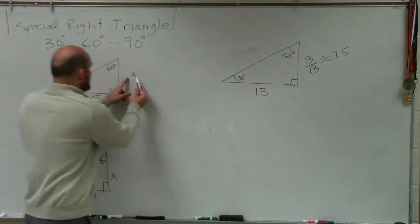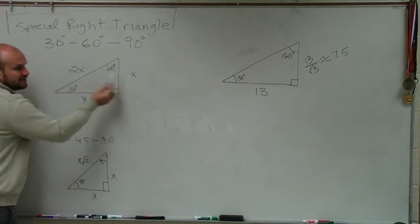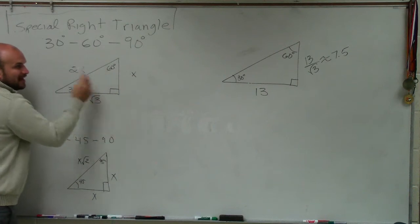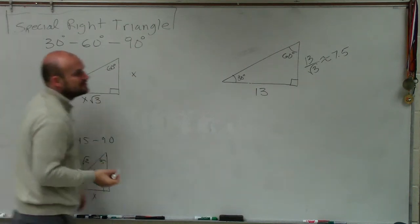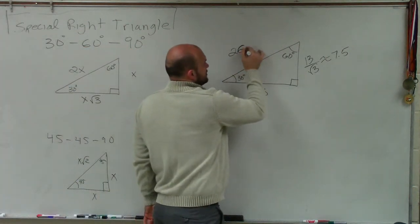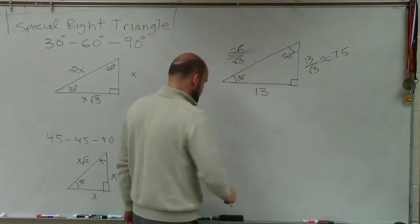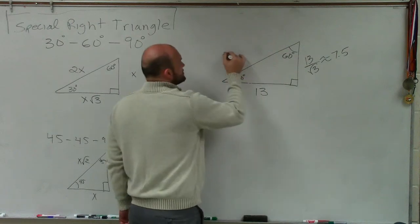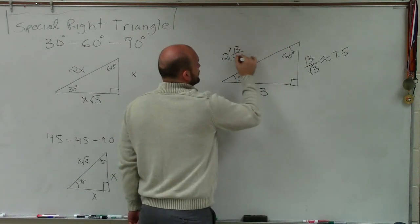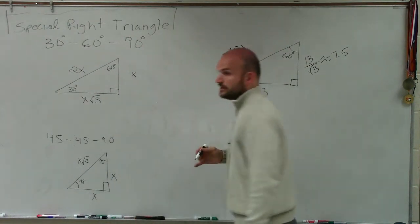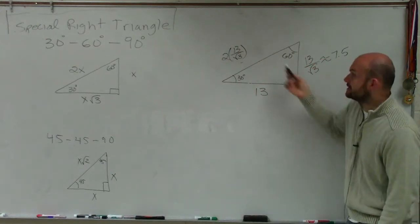Then the next thing, how does my short leg relate to my hypotenuse? It is what? Multiplied by 2. So I can simply just say this is 26 divided by the square root of 3. Or how about I do this? It's 2 times 13 over the square root of 3, right? You just multiply whatever your short leg is by 2.